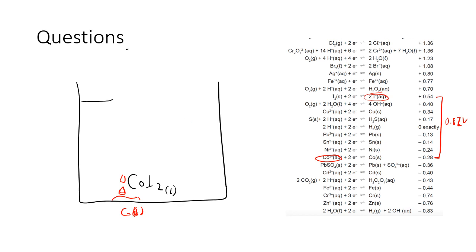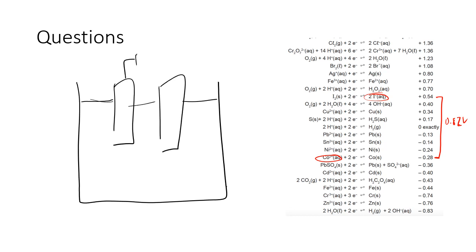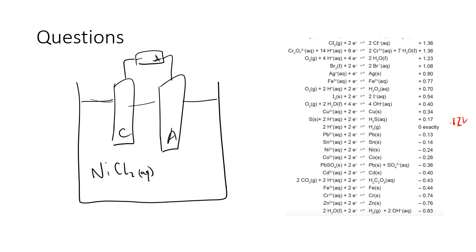Now let's look at aqueous nickel(II) chloride, NiCl₂(aq). Drawing the cell with two electrodes and a power source, the anode is on one side and cathode on the other. In this aqueous mixture there are multiple species that could oxidize or reduce: Ni²⁺ ions, Cl⁻ ions, and water — because it's an aqueous solution. So we have at least three candidate species to consider.